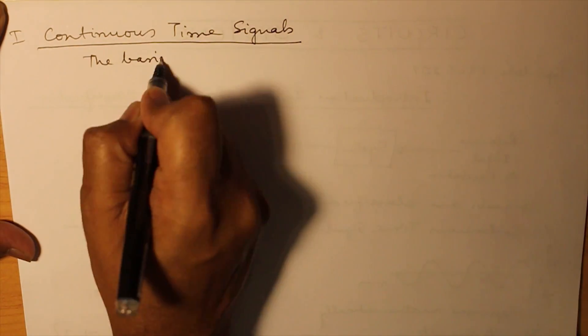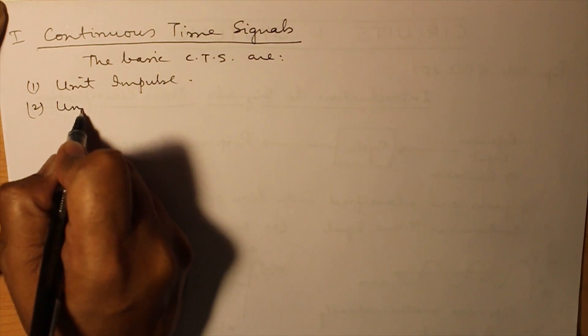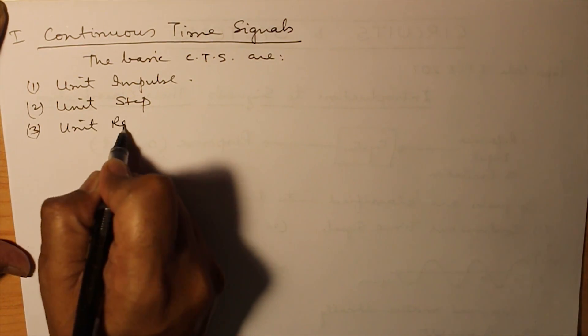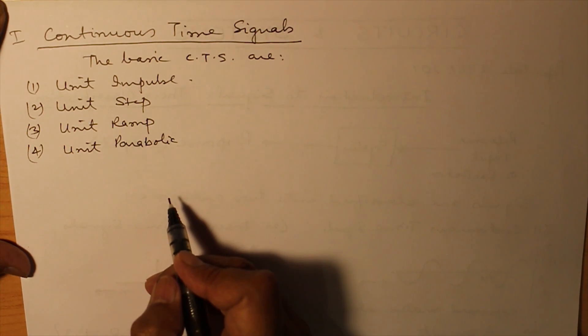The basic continuous time signals are unit impulse signal, unit step signal, unit ramp signal, and unit parabolic signal. All these signals are interrelated to each other. That we will see later on.